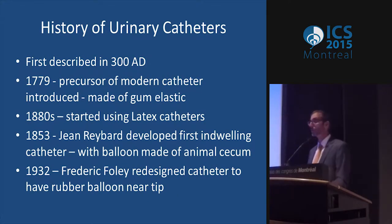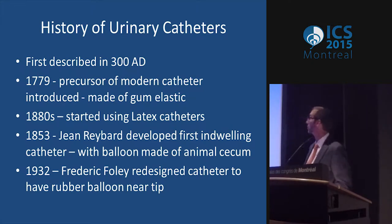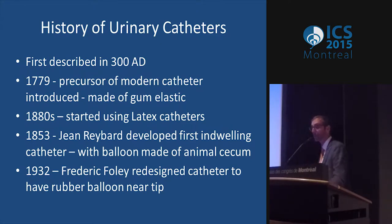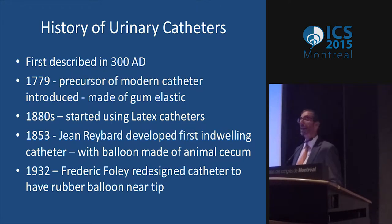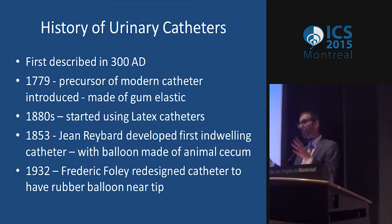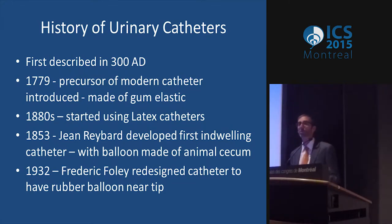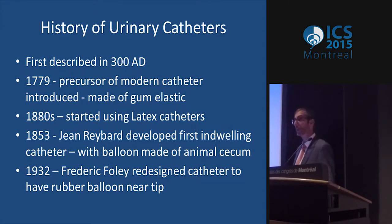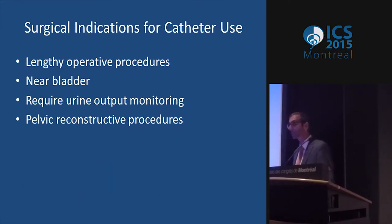You heard a little bit about the history of urinary catheters — these were described almost 2,000 years ago. In the 1880s the first latex catheters were made, and about 80 years ago the catheter we currently use was pretty much developed. And as you've heard a number of times already, except for minor modifications, there really haven't been any major changes in the catheters we have been using.